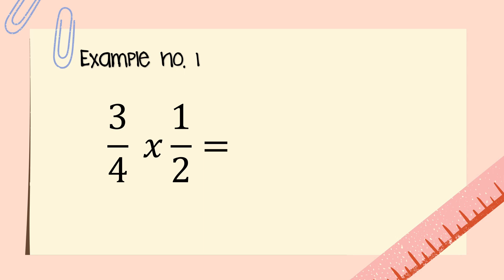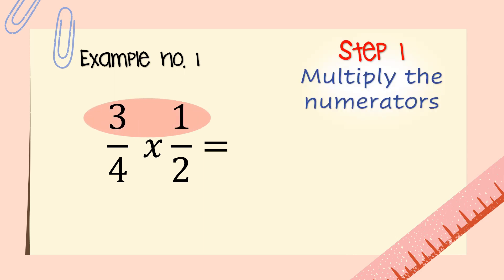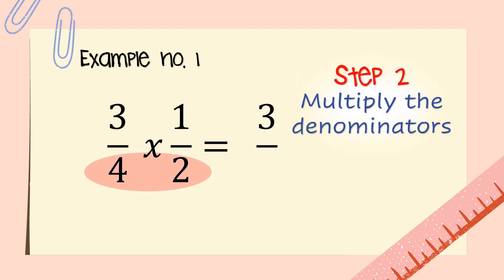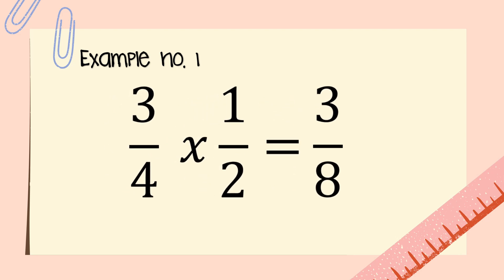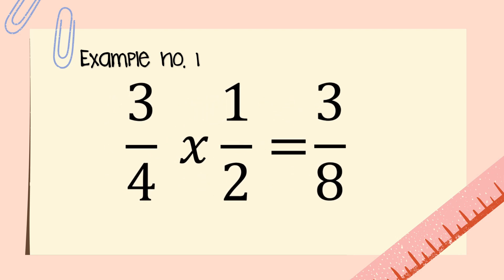Example number one: three-fourths times one-half. Step number one, multiply the numerators — three times one. Step number two, multiply the denominators — four times two equals eight. The answer for three-fourths times one-half is three-eighths.